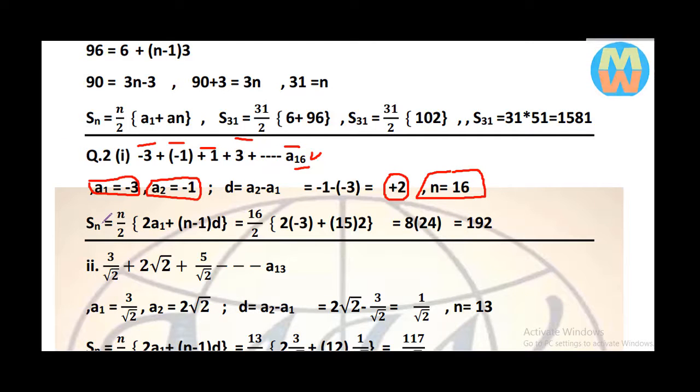The formula for Sn should be remembered: Sn equals n over 2 times 2a1 plus n minus 1 times d. Put the values in and the answer will come. The values are n over 2, 2a1 plus n minus 1 into d.